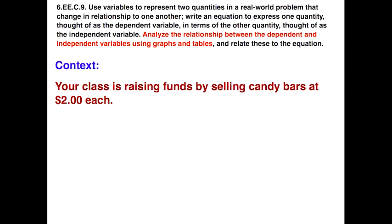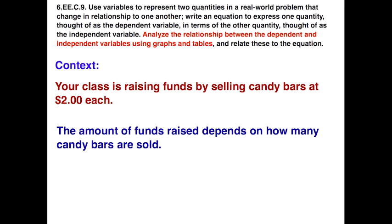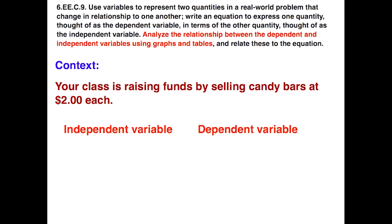Let's look at this one. Your class is raising funds by selling candy bars at $2 each. We need to analyze the relationship. First of all, you have to figure out which is your independent and which is your dependent variable. In this case, how much money you raise is going to depend on how many candy bars that you sell. So the independent variable versus the dependent variable, the money raised is going to depend on how many candy bars we sell. Your candy bars is your independent variable and the money raised is your dependent variable.